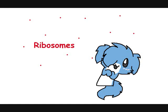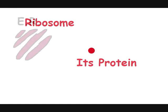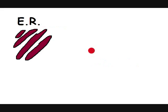Next are ribosomes. The ribosomes produce proteins for the cell. They usually hang out by the ER or in the cytoplasm.